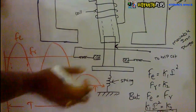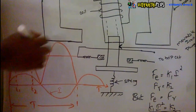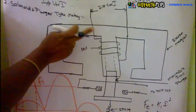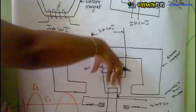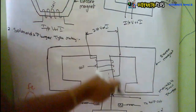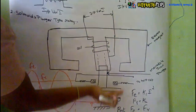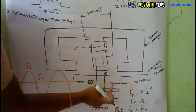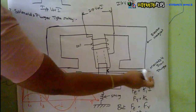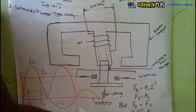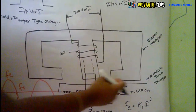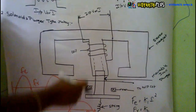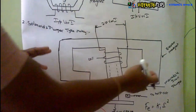Under fault conditions, the current goes high, the electromagnet becomes energized, and it attracts the plunger upward. As the plunger moves up, the trip circuit gets energized and the circuit breaker opens. Immediately the faulty part is isolated from the healthy part.